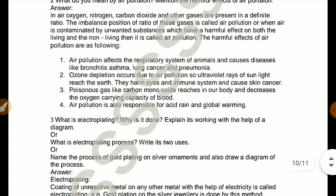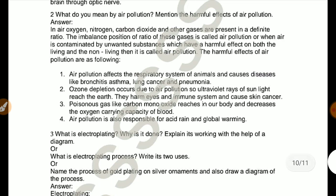What do you mean by air pollution? Mention the harmful effects of air pollution. In air, oxygen, nitrogen, carbon dioxide and other gases are present in definite ratio. The imbalanced proportion of the ratio of these gases is called air pollution. When air is contaminated by unwanted substances which have a harmful effect on both living and non-living, it is called air pollution.